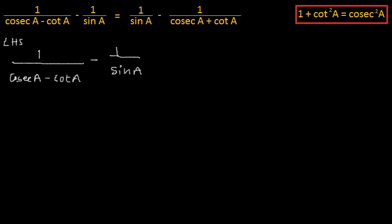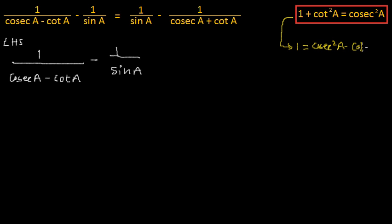The formula we are going to use is: 1 plus cot²A equals cosec²A. We are going to use the modified version of this formula, according to which 1 is equal to cosec²A minus cot²A.